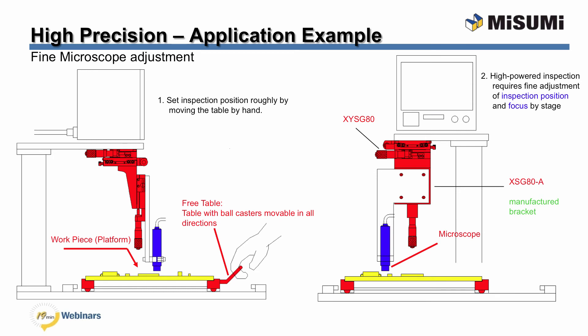This is the final example for fine microscope adjustment. The use of positioning stages made it possible to produce an inspection unit at low cost.